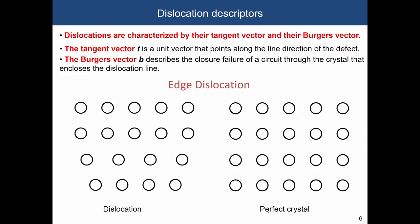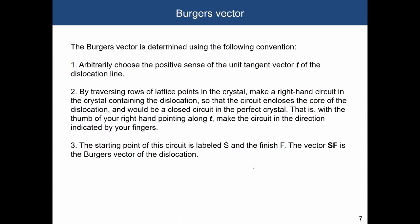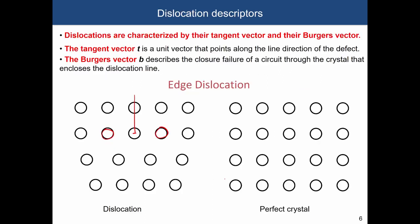This would be a typical edge dislocation — there is an extra plane of atoms in an otherwise perfect crystal, and the atoms are displaced from their ideal positions, making this a defect. The definition and the way we construct this is described on the next slide, which you will have in the annotated slides.